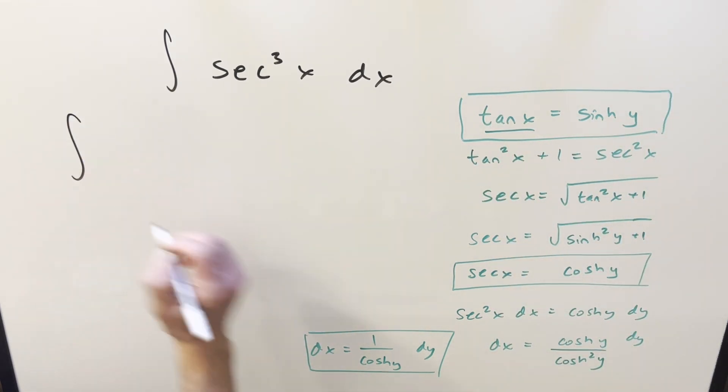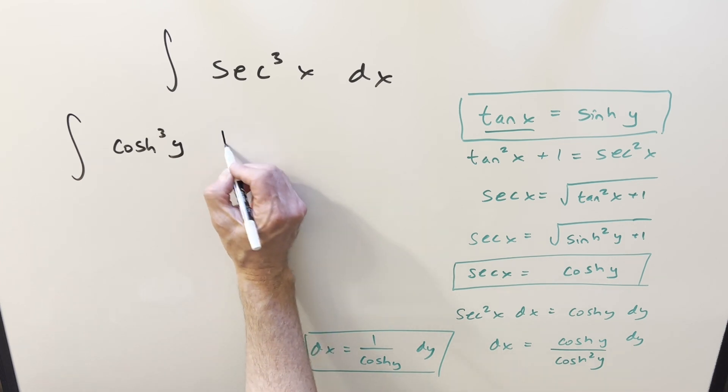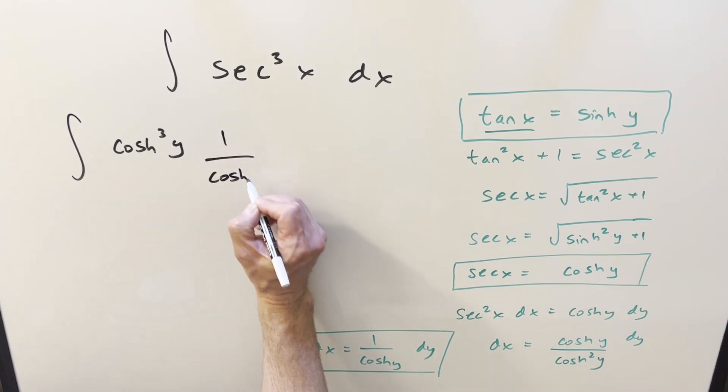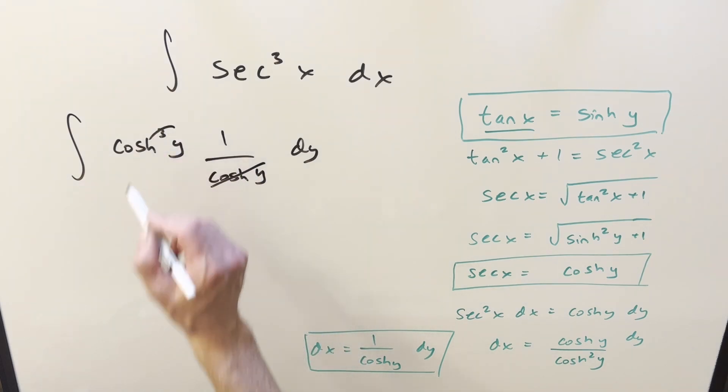So first for secant, we'll use this right here. So I'll write this as cosh cubed of y. Then our dx is going to be this thing, one over cosh y dy. But then I can cancel one of these with one of these. And we're left with, this is going to become cosh squared y.